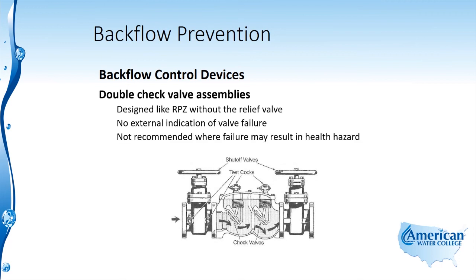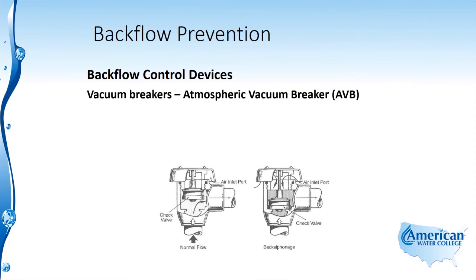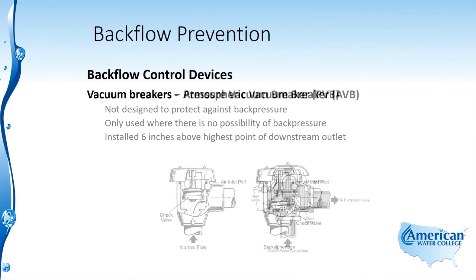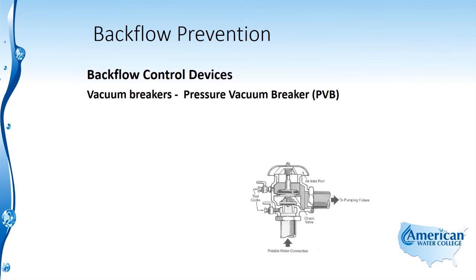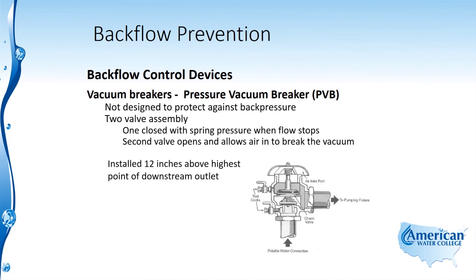The double check valve is not recommended where failure may result in a health hazard. Vacuum breakers, called atmospheric vacuum breakers or AVB, are not designed to protect against back pressure and are only used where there's no possibility of back pressure. They're installed six inches above the highest point of the downstream outlet and are designed to break vacuum by allowing atmospheric pressure into the system. Another type is the pressure vacuum breaker, or PVB, which is also not designed to protect against back pressure. It's a two-valve assembly where one valve closes with spring pressure when flow stops, and the second valve opens to allow air in to break the vacuum. PVBs are installed 12 inches above the highest point of the downstream outlet.